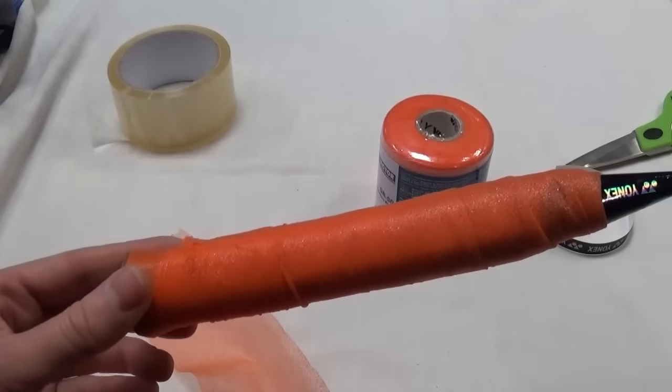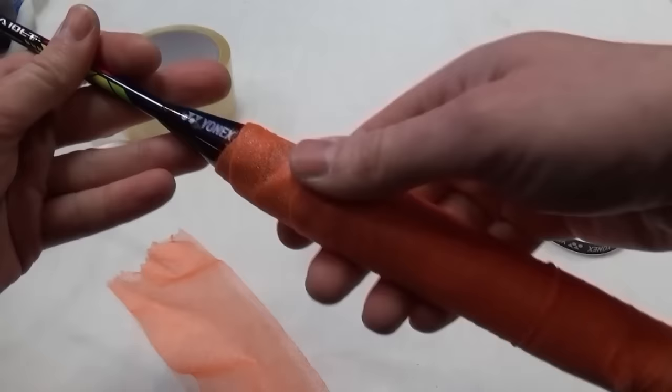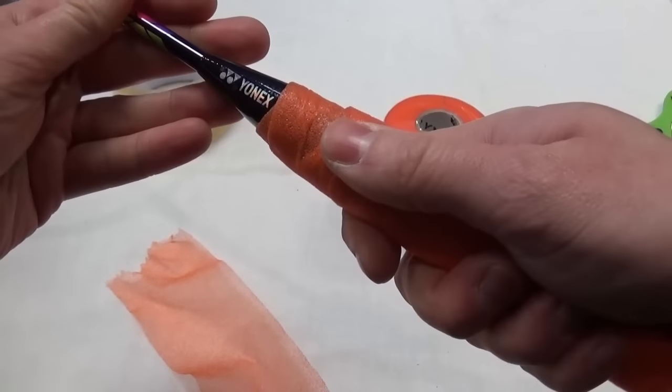Then you can just wind the over grip on top and then you'll have a nice bit of cushioning on your racket.